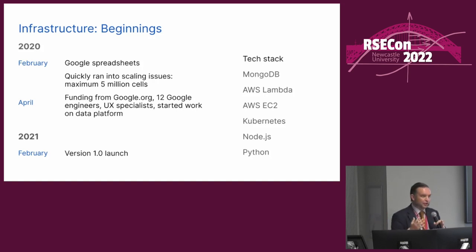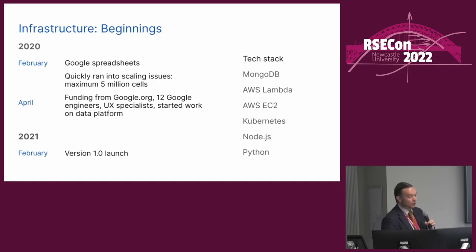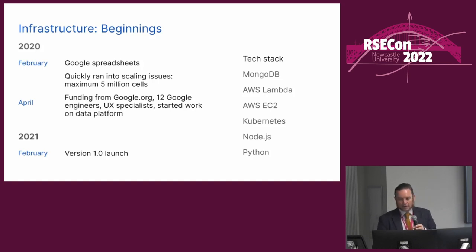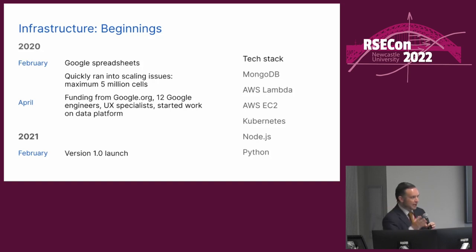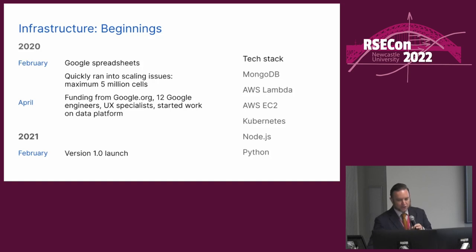That work started in April 2020 and we launched the first version in February. It's based on what we might call a microservices tech stack — though there are really only three microservices. We have a MongoDB database storing all the case records, the line list, and then AWS services on top of that: Kubernetes running our code, and AWS Lambda running some of the scheduled or non-continuous parts of the work.